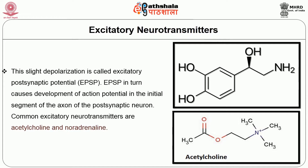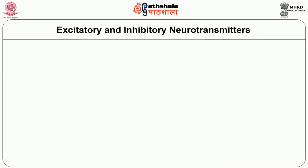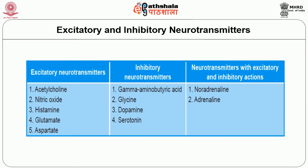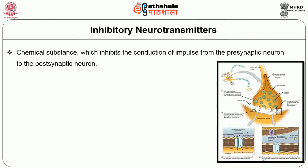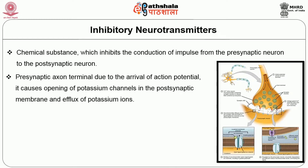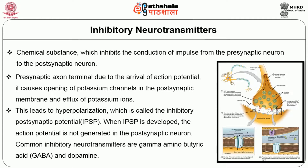Common excitatory neurotransmitters are acetylcholine and noradrenaline. Inhibitory neurotransmitters are chemical substances which inhibit the conduction of impulse from the presynaptic neuron to the post-synaptic neuron. When released from the presynaptic axon terminal, they cause opening of potassium channels in the post-synaptic membrane and efflux of potassium ions. This leads to hyperpolarization, called the inhibitory post-synaptic potential (IPSP). When IPSP is developed, the action potential is not generated in the post-synaptic neuron. Common inhibitory neurotransmitters are GABA and dopamine.